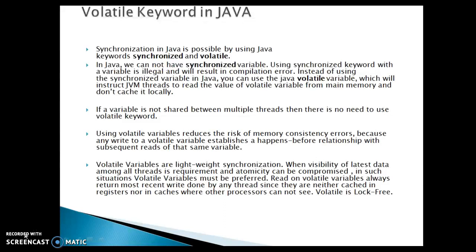Using the volatile keyword reduces the risk of memory consistency errors, because any write to a volatile variable establishes a happens-before relationship with subsequent reads of that same variable. Volatile variables are lightweight synchronization — when visibility of the latest data among all threads is required and atomicity can be compromised, volatile variables must be preferred. A read on a volatile variable always returns the most recent write done by any thread, since they are neither cached in registers nor in caches where other processors cannot see. Volatile is lock-free and does not use any locking mechanism like the synchronized keyword.